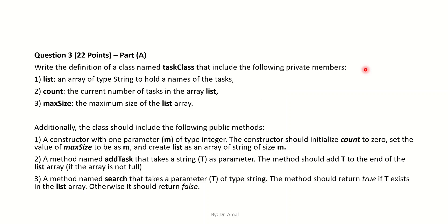The question has two parts. In the first part, worth 22 points, you have to write the definition of a class named TaskClass. It should include the private members: list as an array of type String to hold the names of the tasks, count as the current number of tasks in the array, and maxSize as the maximum size of the array.